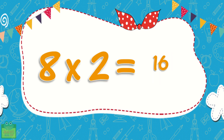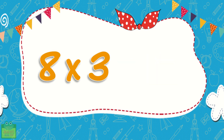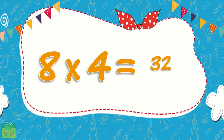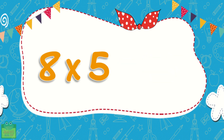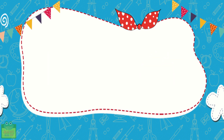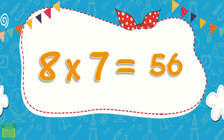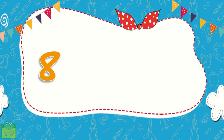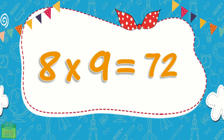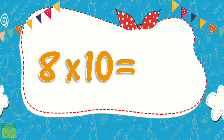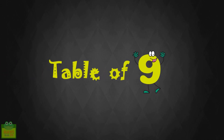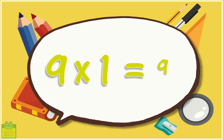8×2=16, 8×3=24, 8×4=32, 8×5=40, 8×6=48, 8×7=56, 8×8=64, 8×9=72, 8×10=80. Table of 9: 9×1=9.